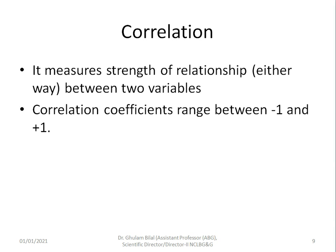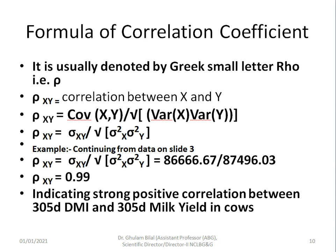The next parameter is correlation. It is a measure of the strength of the relationship between two variables, and the value of the correlation coefficient ranges between minus one and plus one. It is denoted by the small Greek letter rho, written as ρxy for the correlation between x and y.